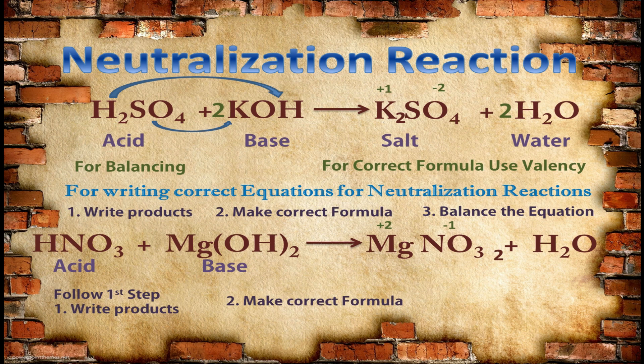Now you need to make the correct formula of the salt. The formula of this salt will be Mg(NO₃)₂. This 2 will look like it's part of 3, so to make it different from the previous 3 we insert brackets, giving Mg(NO₃)₂. This shows the 2 is written to make the correct formula and is not part of the nitrate ion formula. Now follow the third step — balance the equation. Magnesium is already balanced. For balancing nitrogen, write 2 with HNO₃. For balancing hydrogen, write 2 with water. Oxygen is already balanced.